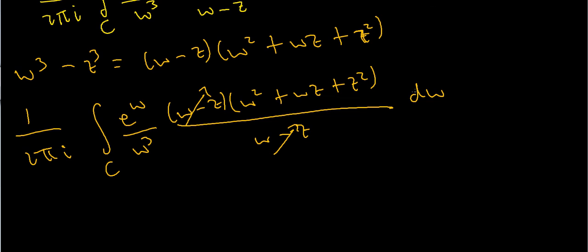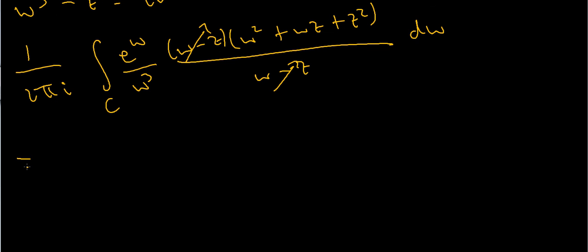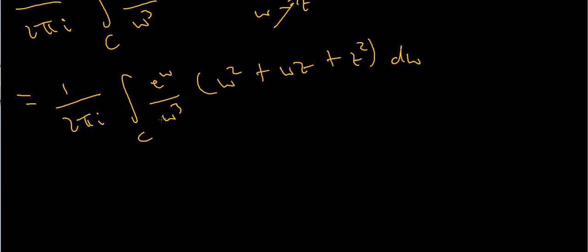So what's next? This is just equal to 1 over 2 pi i times the integral over the contour C of e to the w over w cubed times w squared plus wz plus z squared, dw. But z is just some complex number, so I can actually pull it out of the integral. If I do that and cancel off any w's, I'll get the following.